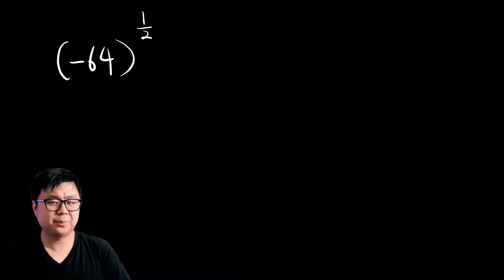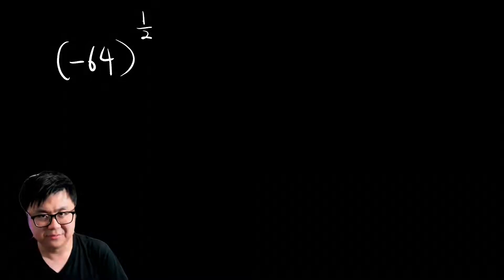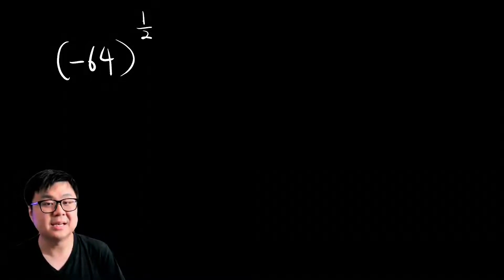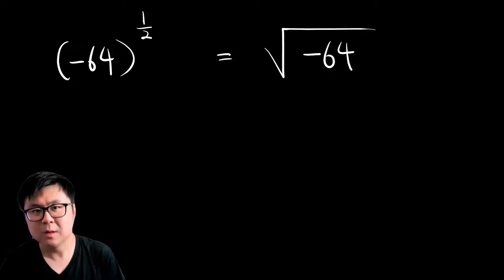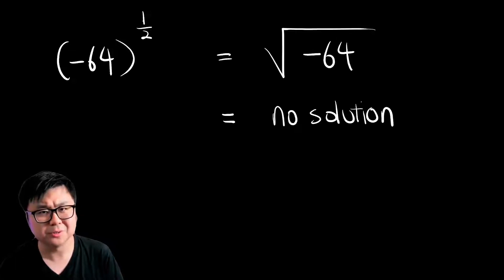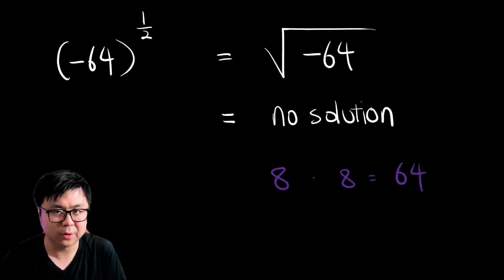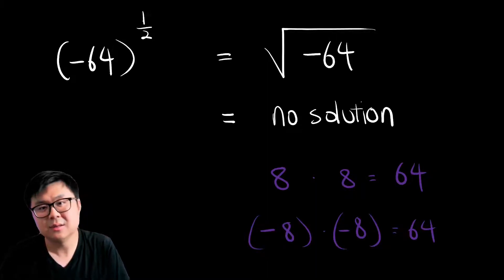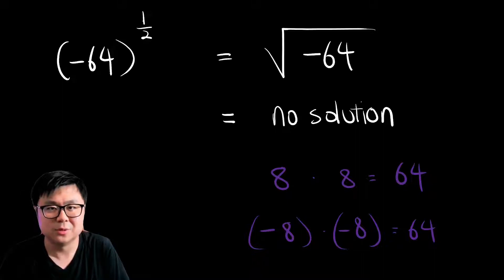The next example is pretty similar, with the difference of having brackets around our negative 64. That actually changes a lot, because the negative sign is now part of our base, which means it gets dragged into our radicand as well. So what is the square root of negative 64? No solution — because positive 8 times positive 8 gives us positive 64, and negative 8 times negative 8 also gives us positive 64. There's no number that can multiply by itself and give us negative 64.